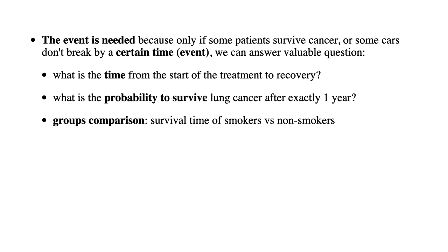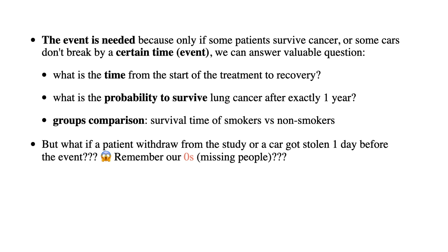Is it half a year? Is it one year? What is the probability of surviving cancer after exactly one year? This matters because if I know my survival probability in the second year is very low, I will spend my first year very differently. Another example is comparing survival times of smokers versus non-smokers. But what if a patient withdrew from the study or a car got stolen one day before the event? Remember our missing observations — what if people in our Titanic experiment went missing before 10 days? We have to censor them.